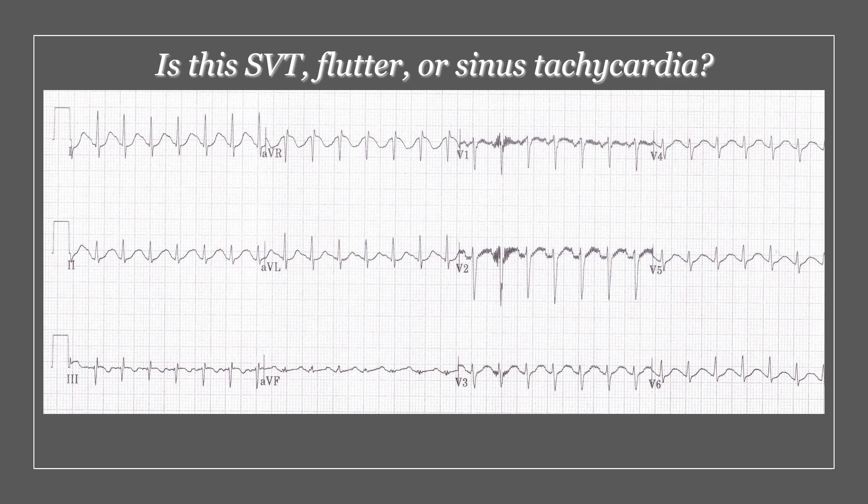There are other possibilities but we're not going to go there. To differentiate the three, the answer is going to be in the P waves. If you can see just one P wave before each complex then you're talking about sinus tachycardia. No P waves at all means SVT, and more than one P wave means atrial flutter. So the answer is in the P waves.